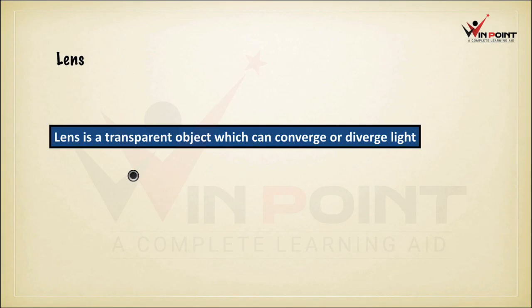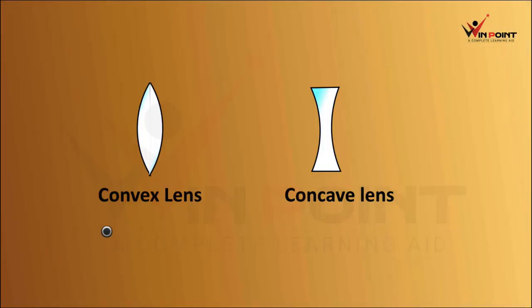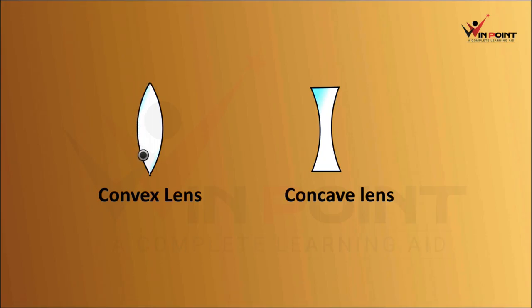There are two types of lens: convex lens and concave lens. This convex lens is having two surfaces — surface number one and surface number two.